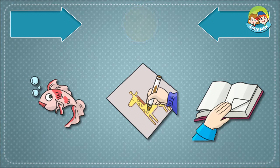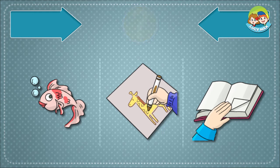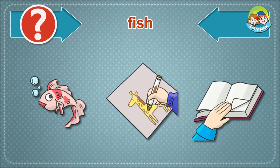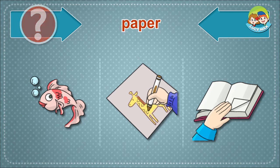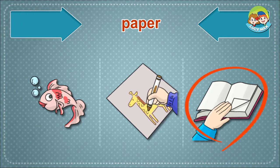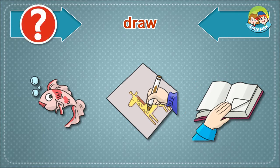Listen and choose the right picture for the word. Fish. You can see fish in a river or sea. Fish. Paper. Draw.